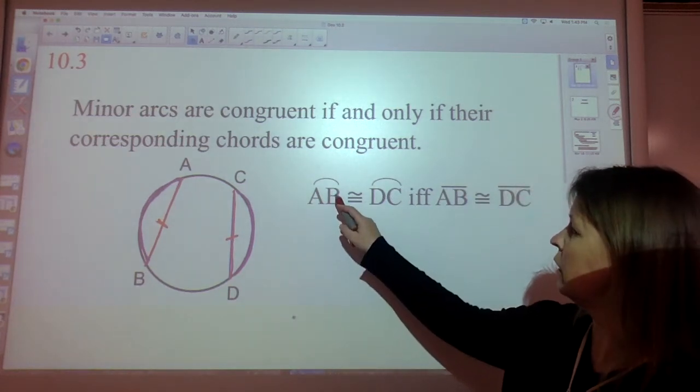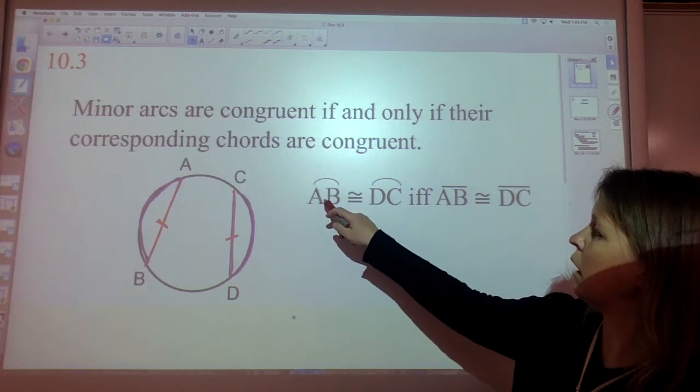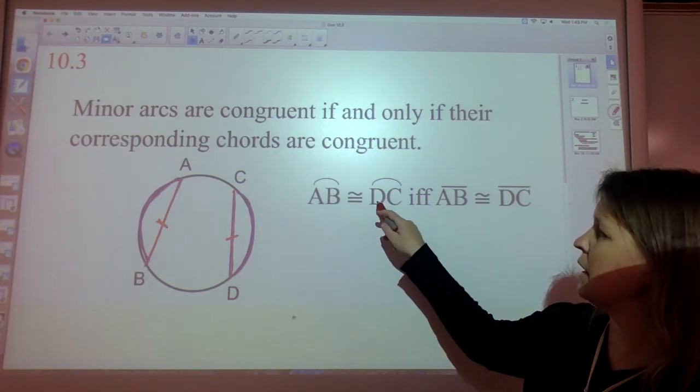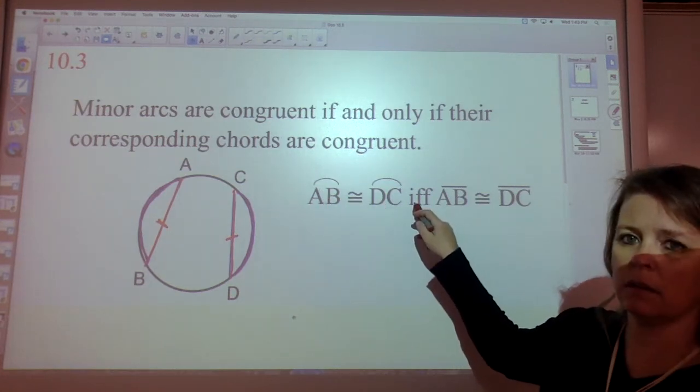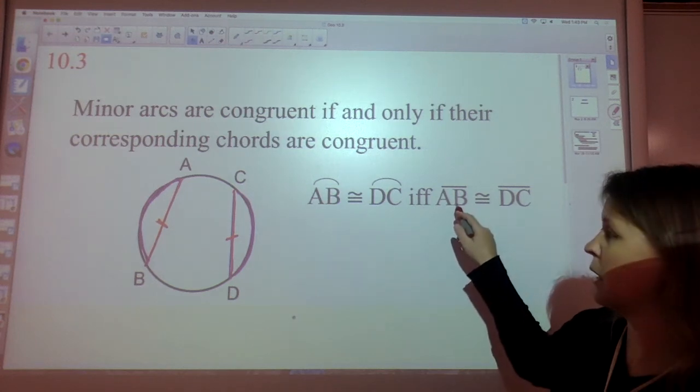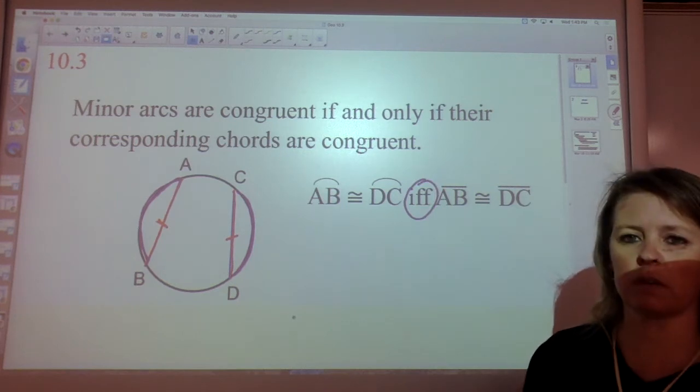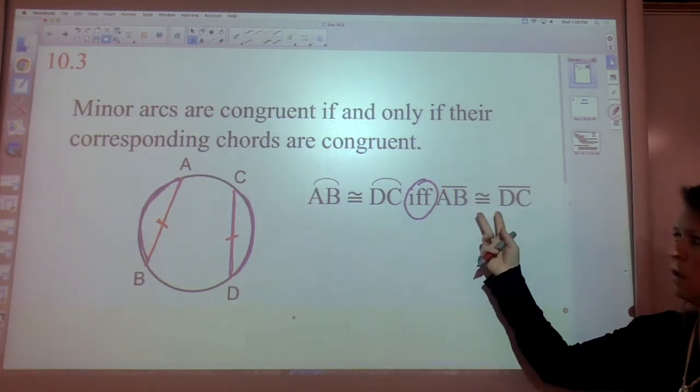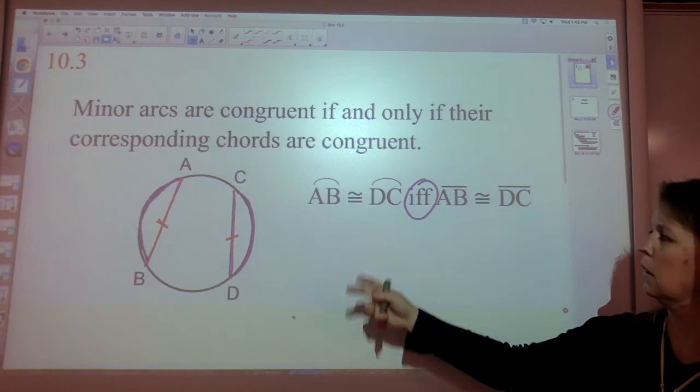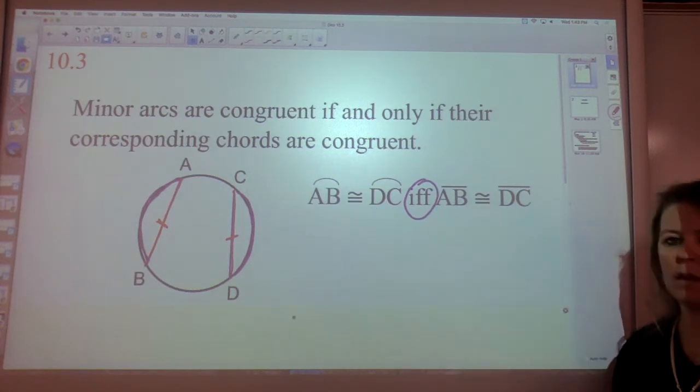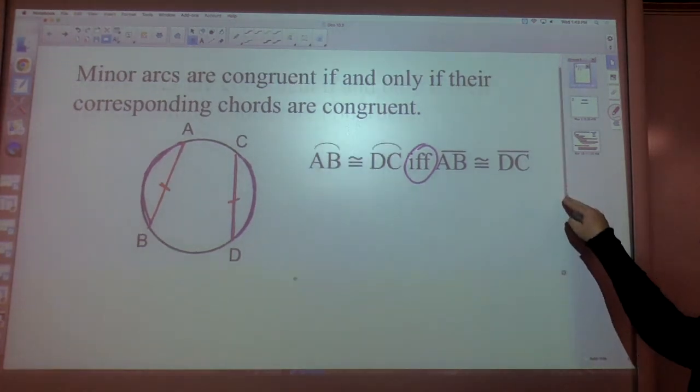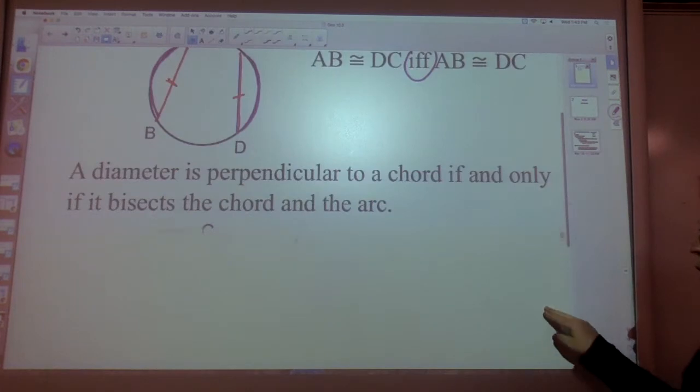So if arc AB is congruent to arc DC, then segment AB is congruent to segment DC. And remember, if and only if works the other way around. If the chords are congruent, then the arcs are congruent. If the arcs are congruent, then the chords are congruent. And that's the way it works if you don't have a central angle.